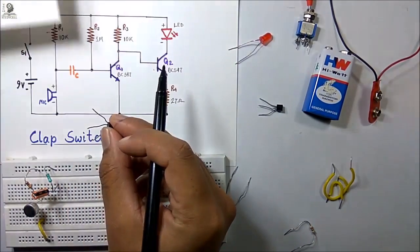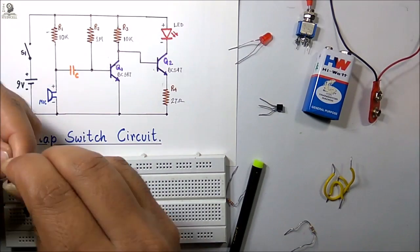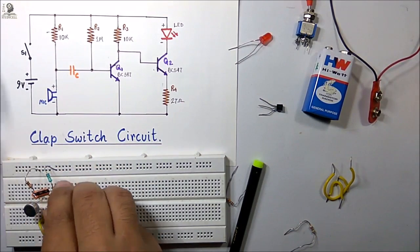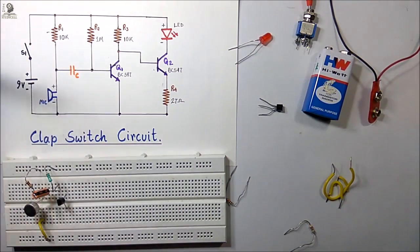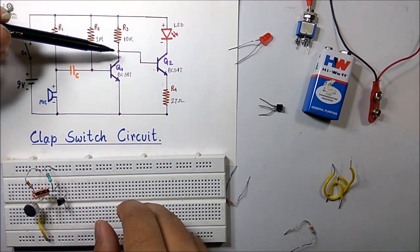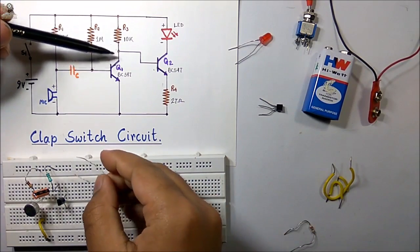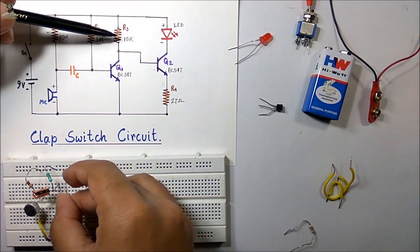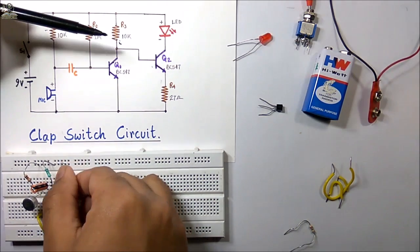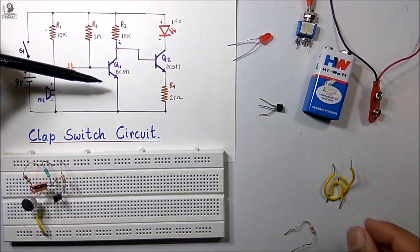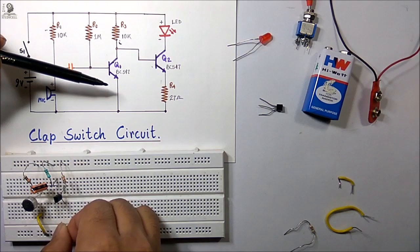Now I have to connect this transistor to the Vero board. After that I have to connect the 10k ohm resistor with the collector of the first transistor. Next, with the help of a jumper wire, I am connecting the emitter to the negative rail.